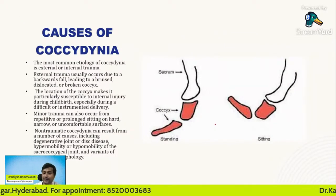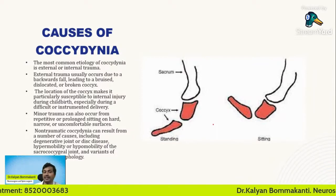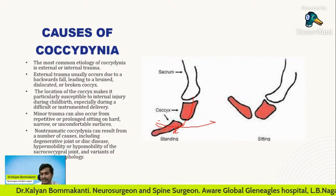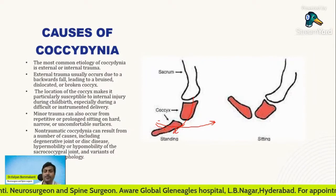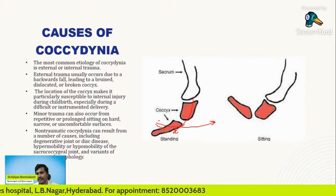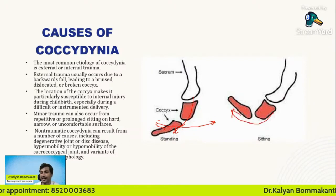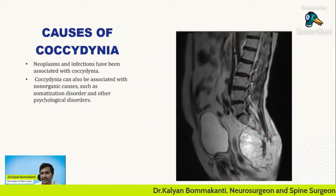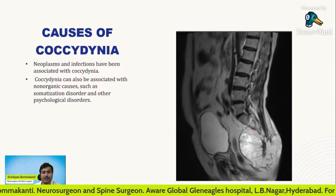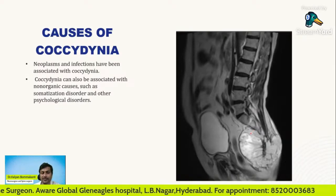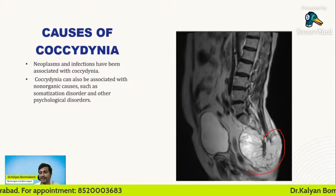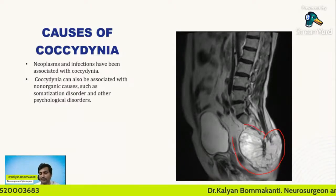These were the traumatic causes. Non-traumatic causes are equally important for coccydynia. A coccyx which is hypermobile — moving excessively forward or backward — or a coccyx which is completely rigid and not mobile at all, are non-traumatic causes of coccydynia. A hypermobile coccyx causes coccydynia by putting pressure on the ligaments. Rare causes include neoplasms and infections. In very rare cases, non-organic causes such as somatization and other psychological disorders should also be ruled out. Always rule out infection or neoplasm — for example, a chordoma of the coccyx — as a cause of coccydynia.